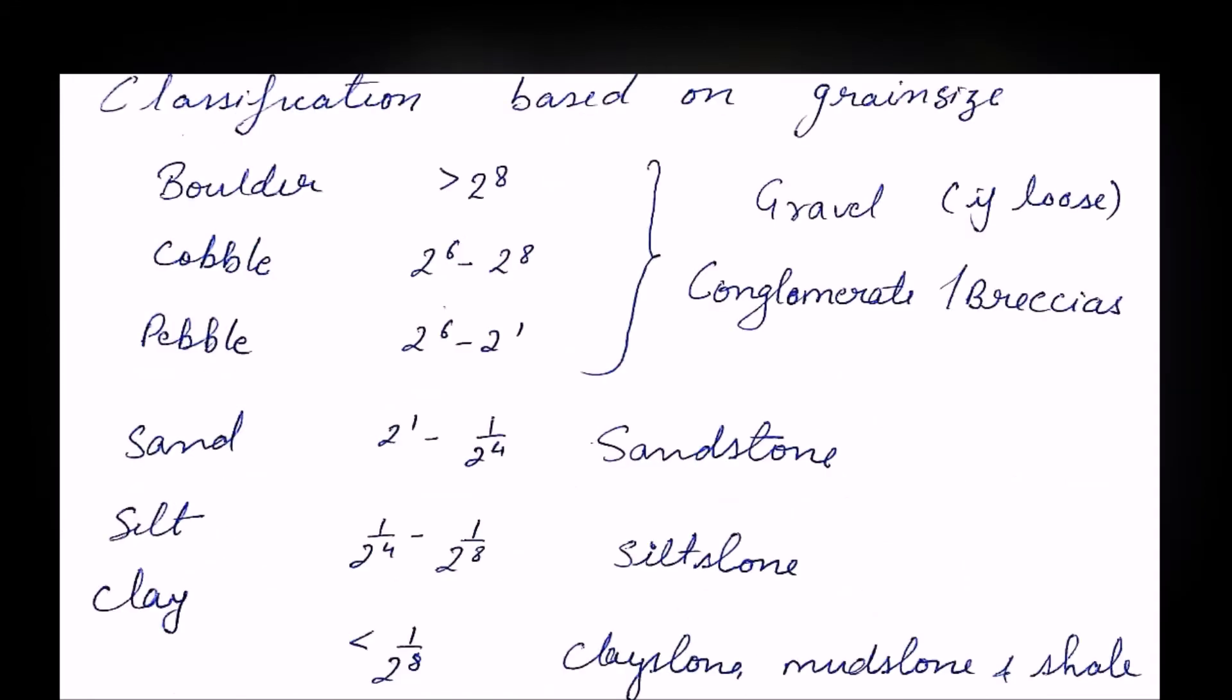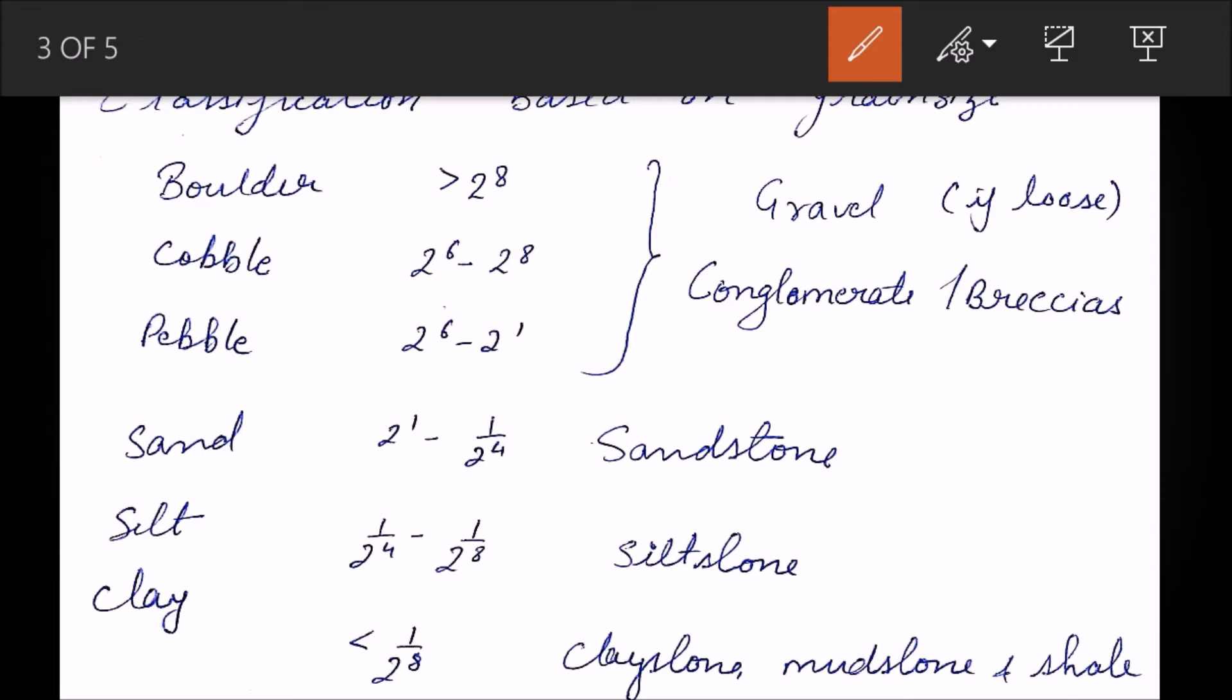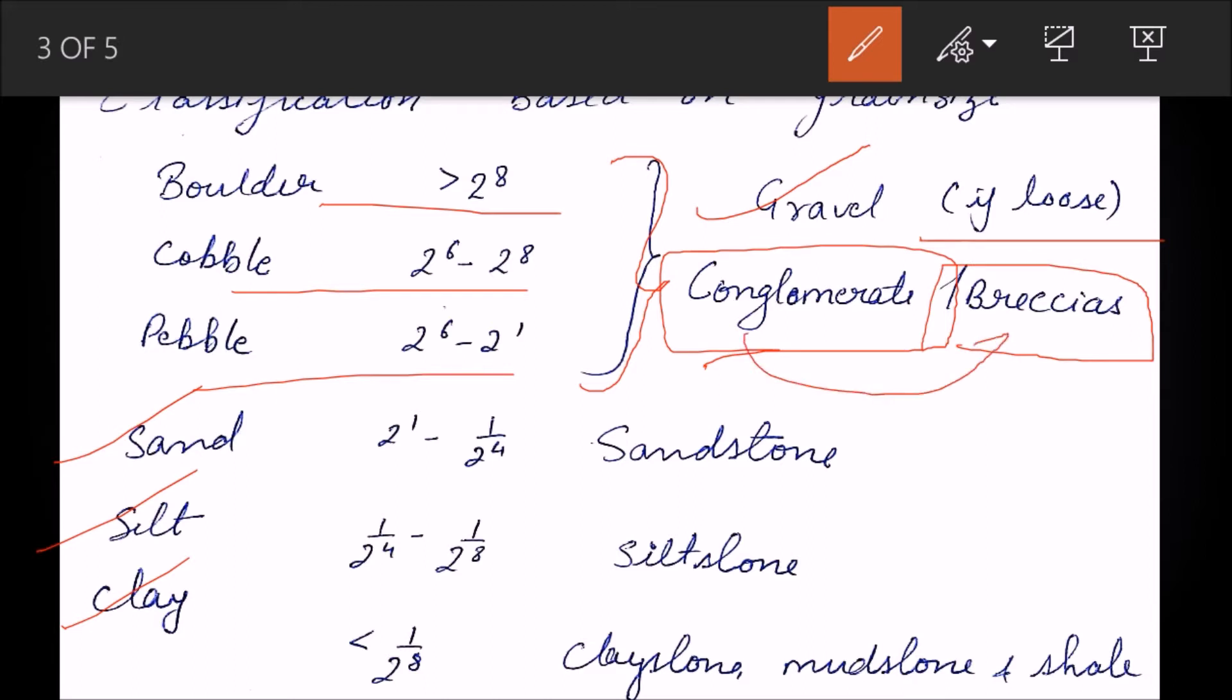Sedimentary rocks are classified on the basis of grain size. There is boulder, cobble, pebble, then there is sand, silt, and clay. All these first three are called gravel if they are in loose conditions. They are called conglomerate if they are well rounded and breccias if they are angular. Conglomerate and breccia are the consolidated forms, and loosely they are called gravels.